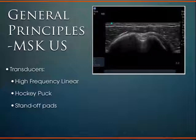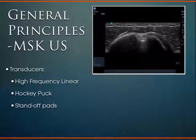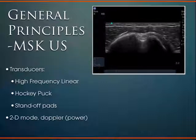There are other specific MSK transducers as well — one's called the hockey puck. It's a really small, skinny transducer helpful for small digits and things like that. There's also something called a standoff pad. There's a certain focal point for those sound waves, and if you're imaging a finger with a really tiny joint, that focal point could be past the joint or too deep. The standoff pad goes on top of the finger, brings the probe up off the anatomical region, and focuses the focal point more appropriately.